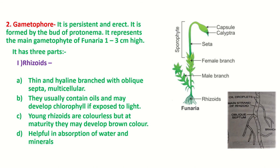Now discussing the gametophytic plant body — there are two stages: the protonema (juvenile) which we have discussed, and the adult gametophyte or gametophore. The gametophore is persistent and erect, unlike the protonema which is ephemeral and heterotrichous. The gametophores are produced from buds formed on the protonema. The adult gametophyte of Funeria consists of three parts: rhizoids, the axial system (stem), and leaves.